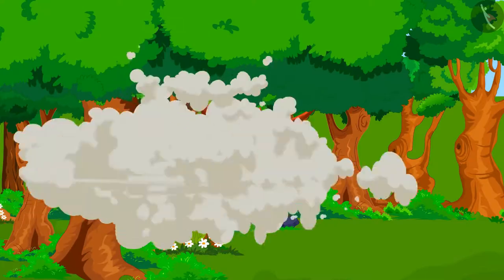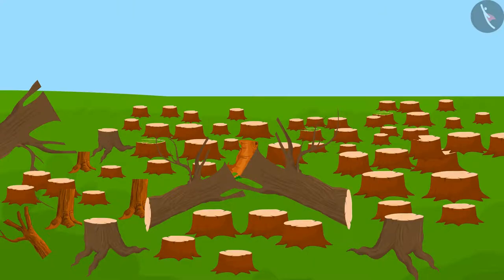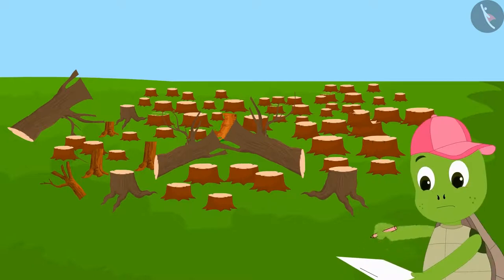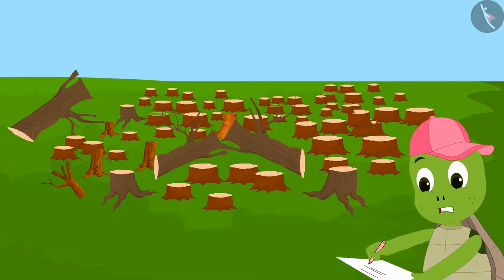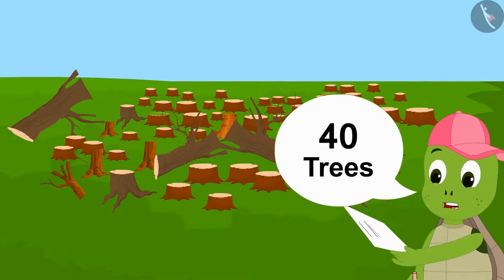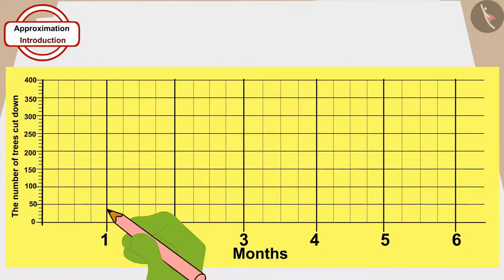A month passed and trees were still getting cut in the village. By the end of the month, he added the total number of trees cut down. Oh God, a total number of 40 trees were cut this month. Let me show this by making a dot like this on this paper.